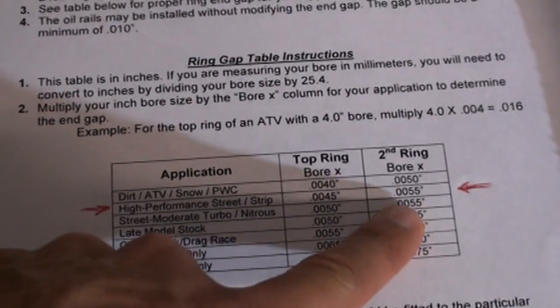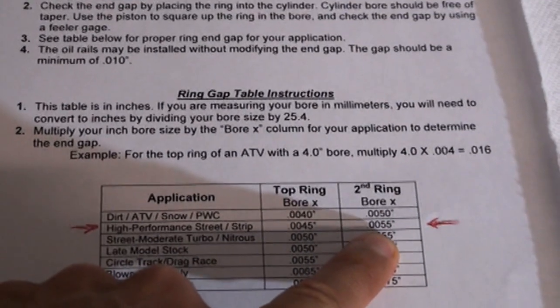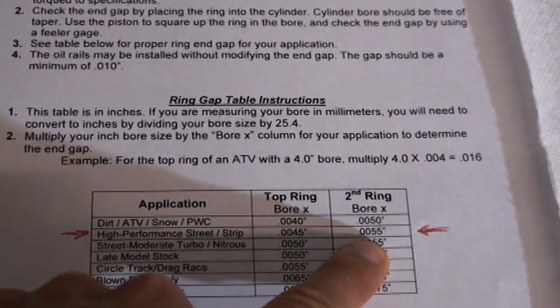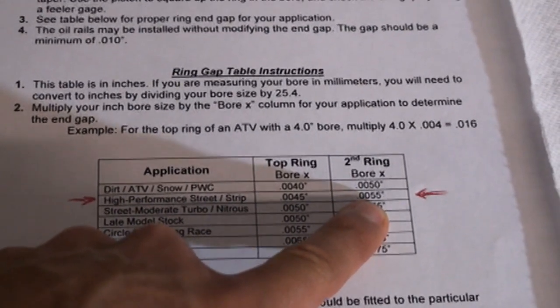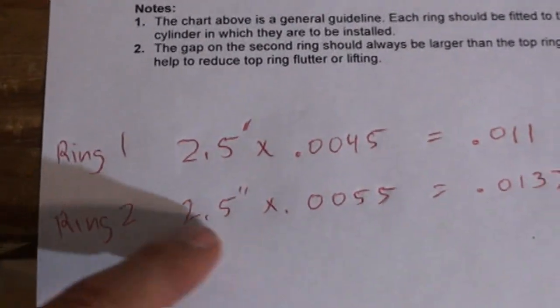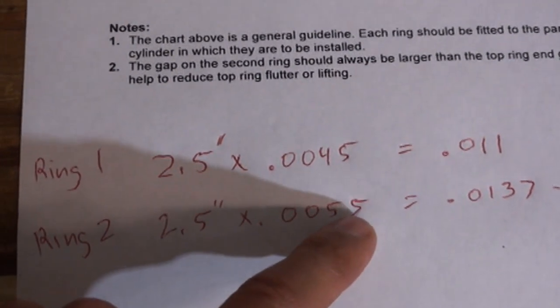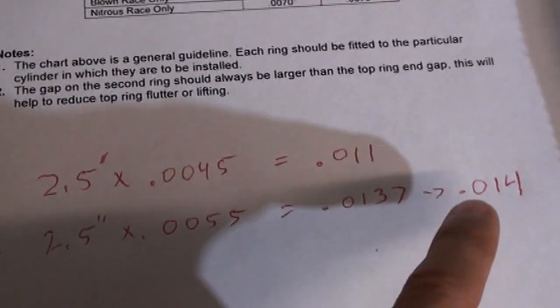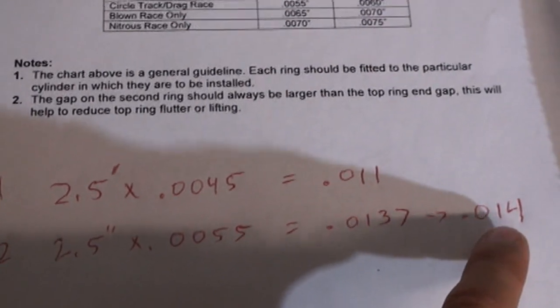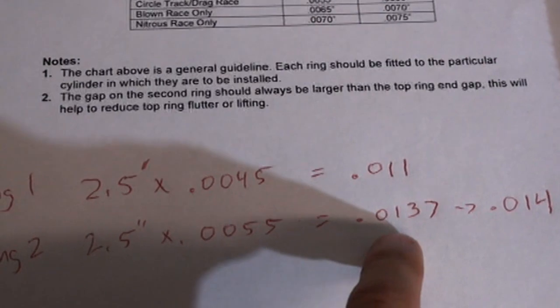Then, for the second ring, this is really important, it has to be a larger gap than the top ring. And that one's going to be .0055 per inch of cylinder bore. So again, our cylinder that we're working on is 2.5 inches times .0055 equals .0137. And we're going to round that up because our feeler gauges don't go that much. So basically it'll be .014. Slightly larger for your second ring is okay, just a teeny bit.